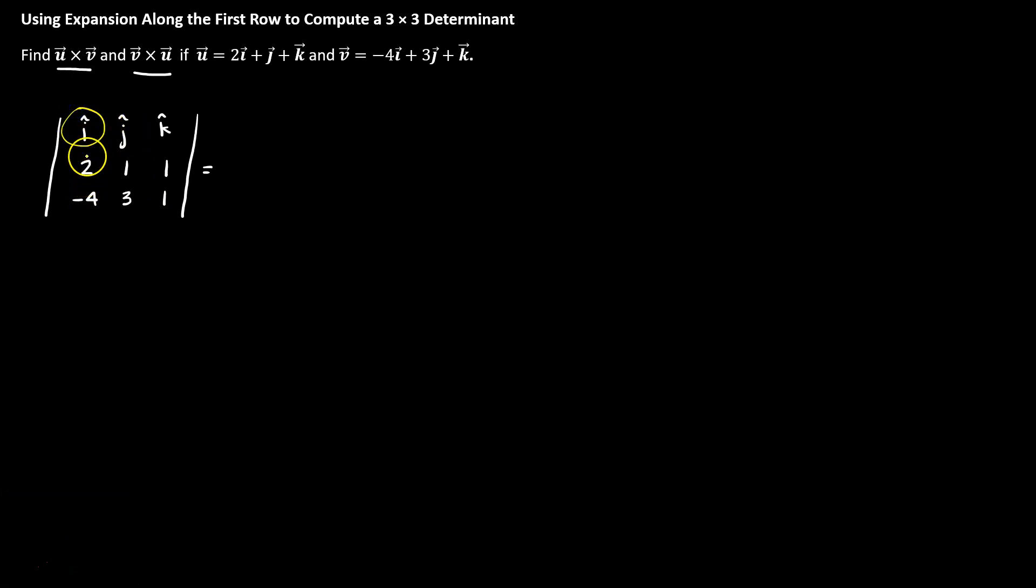So for the i component, we'll cross off the underneath and the horizontal. That's going to leave me this 2x2 matrix, which I'm going to go ahead and multiply that 2x2 out. I have 1 times 1 on the first diagonal, minus 1 times 3 on the second diagonal. So that's my i hat component.